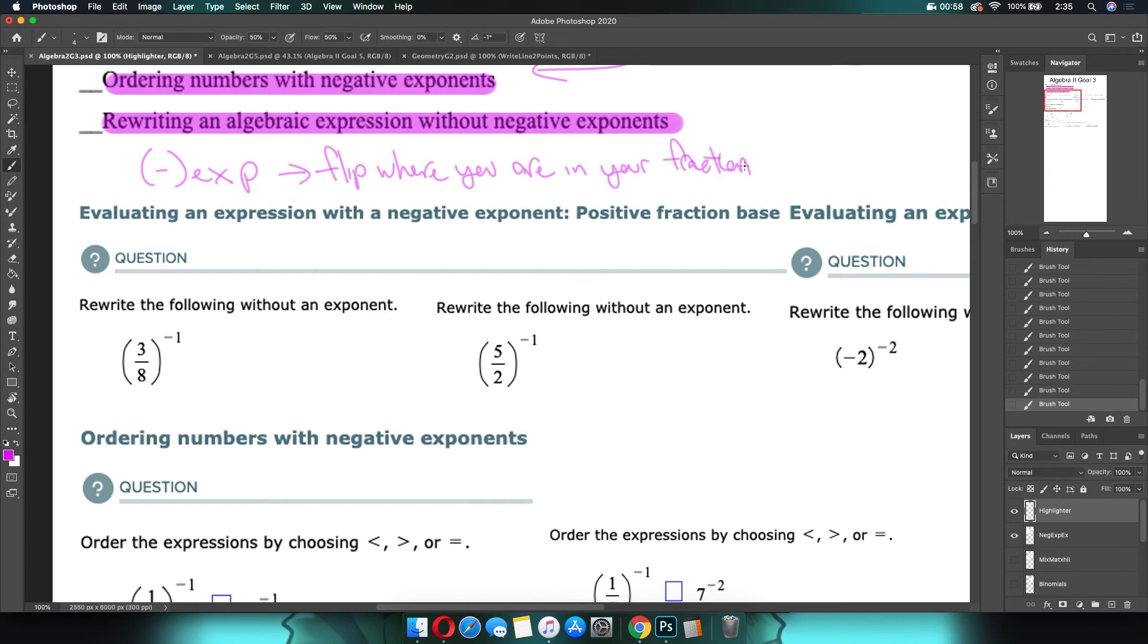For example, if we have something like x over 3 to the negative 2, that negative 2 tells me that this 3, which is on the bottom of the fraction, needs to move up to become 3 squared x, which simplifies to 9x. That's what we're trying to shoot for.